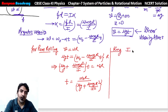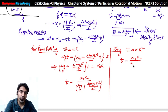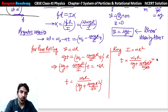Hum compare karayein ring ke liye aur disk ke liye. Toh agar ring ki baat karayein - I ka value hoga mr². So time = omega₀·r / [mu·g + mu·mg·r²/(mr²)] = omega₀·r / [mu·g + mu·g] = omega₀·r / (2·mu·g). So t_ring = omega₀·r / (2·mu·g).